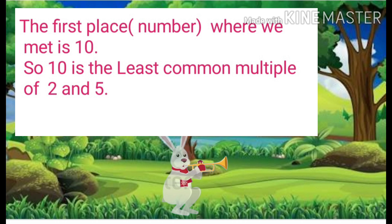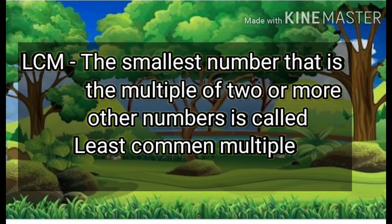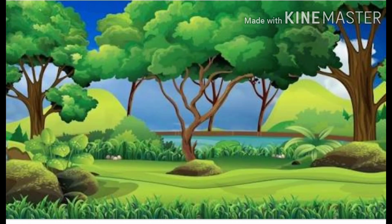The first place or number where we met is ten. So ten is the least common multiple of two and five. LCM — the smallest number that is the multiple of two or more other numbers — is called the least common multiple.